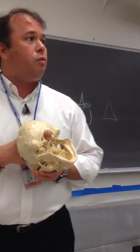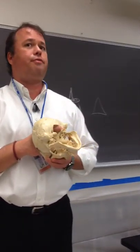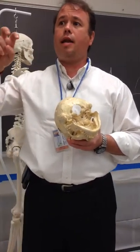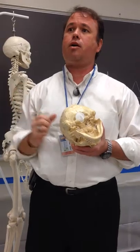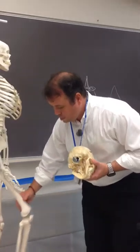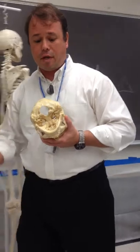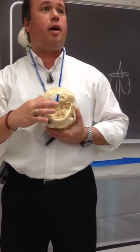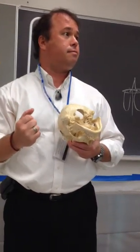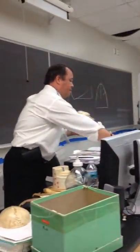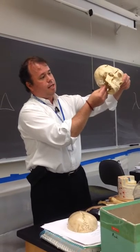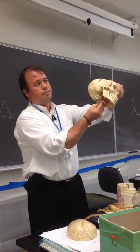Going through the occiput where your spinal cord enters is the foramen magnum. There are also right and left occipital condyles — rounded articular surfaces like the condyles of the femur and tibia — and this is where the skull articulates with the first bone of the neck. That joint allows us to nod our head.